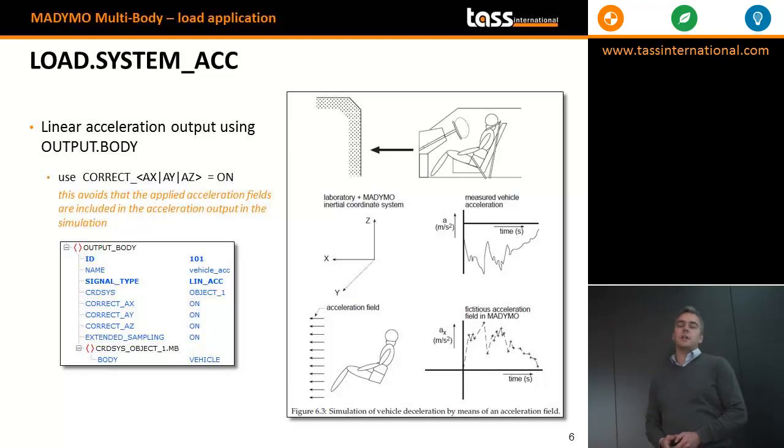Under OUTPUT.BODY, there is an option CORRECT_AX, AY, or AZ, which you can set to ON. When you set this correct option to ON, the accelerometer will not sense the artificial acceleration field.